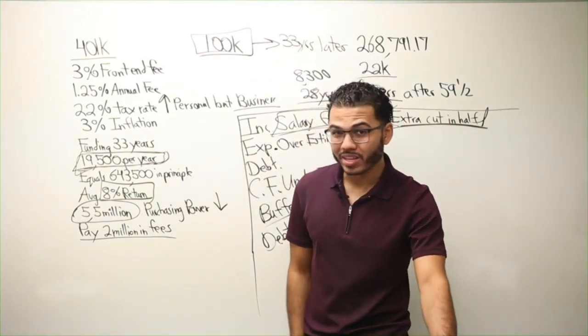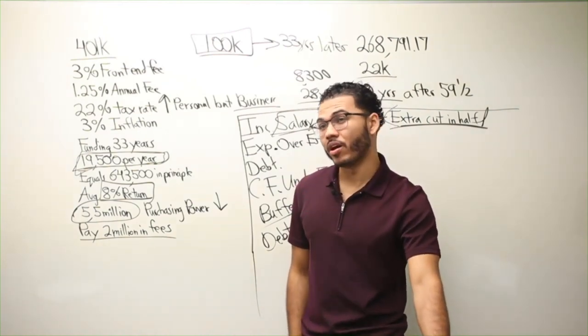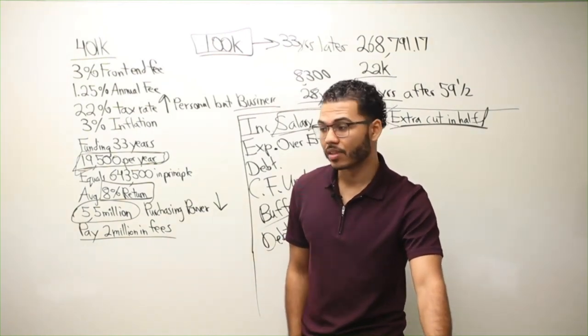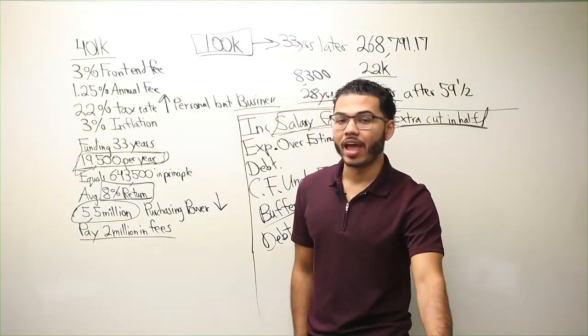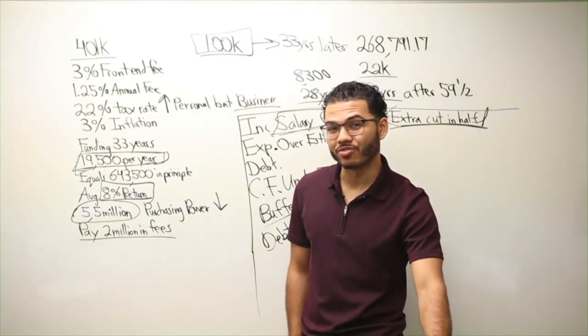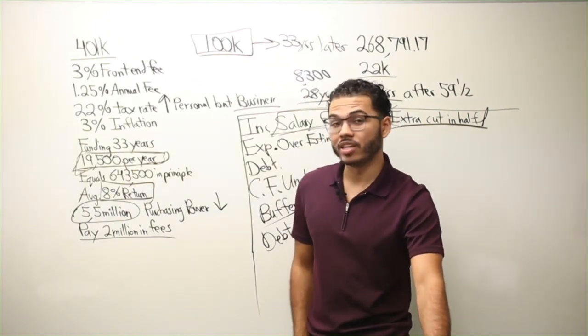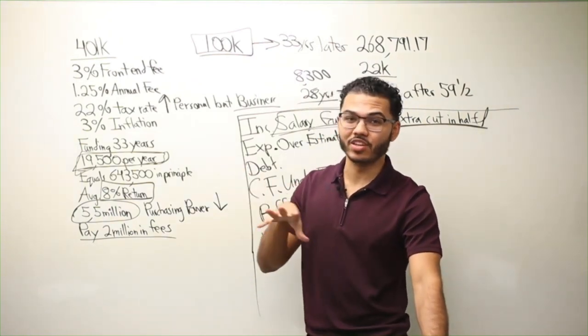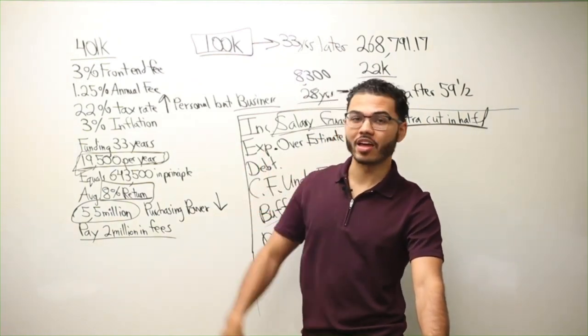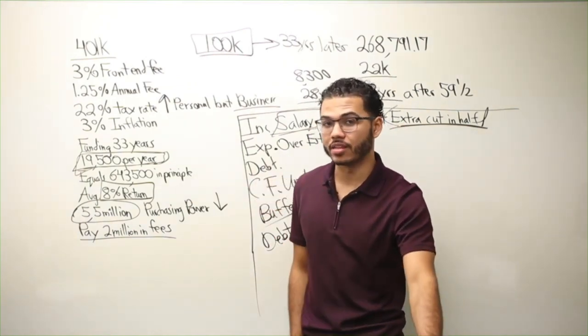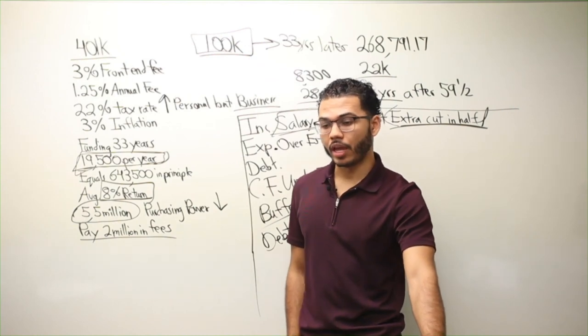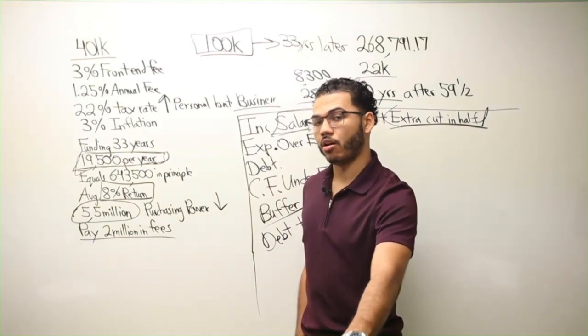My death benefit is $4 million right now, but when I'm 90-something years old, my death benefit will be $15 million plus. And that's if I just fund it for seven years. So I'm funding it for just seven years, putting in $70,000 a year - that's $490,000 in principal.